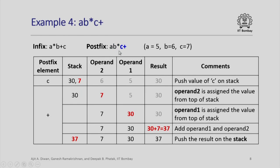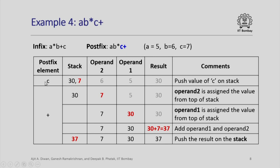Let us go to the subsequent characters: C and plus. When C comes it is an operand so we push it onto the stack. Then comes the operator plus. When the operator comes we again apply the same logic: we have two operands on the stack, we get them one by one into operand 2 and operand 1, and perform the operation plus. The result will be 37, and the result 37 will now be pushed onto the stack. Please note that when we assign values to operand 2 and operand 1 from the top of the stack, we have to pop that item out because we have already consumed it.